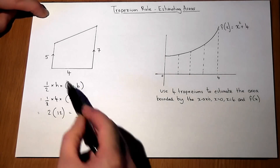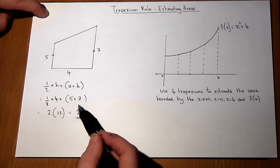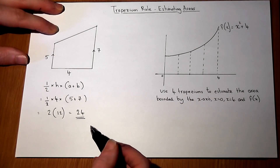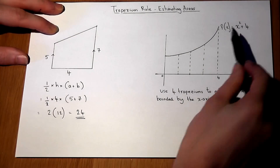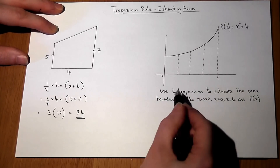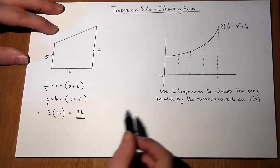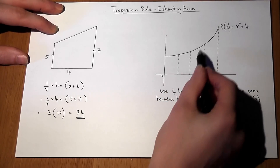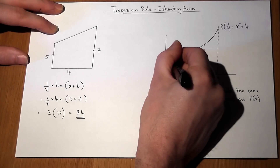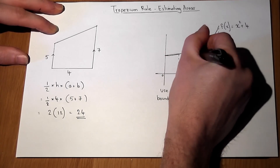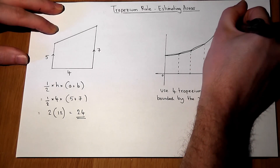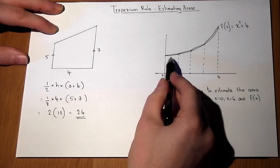Now we can adapt this technique to estimate areas under curves. Suppose we have the graph of x squared plus 4, and we want to use four trapeziums. If we split this curve up into four trapeziums, they quite closely match the area under the curve, albeit a slight overestimate.